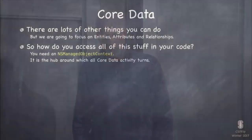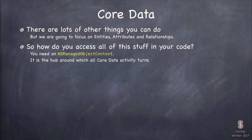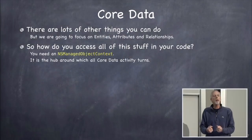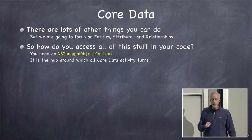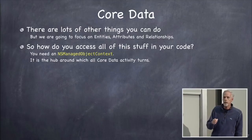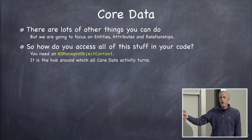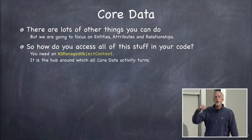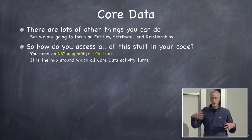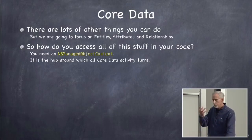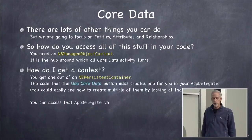Now that you've defined all your entities, attributes, and relationships, what can we do with these things? To do anything with it, we need to get a hold of them in our code. And to do that, we need another important class: NSManagedObjectContext. Those things in the database are NSManagedObjects — you need an NSManagedObjectContext, which represents a database, to do anything with them. This is the hub around which Core Data activity turns.